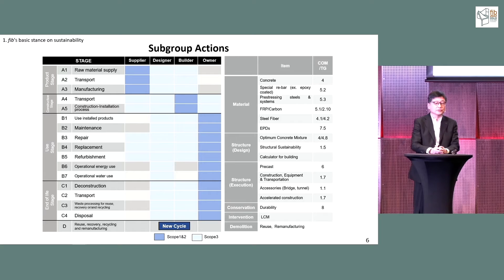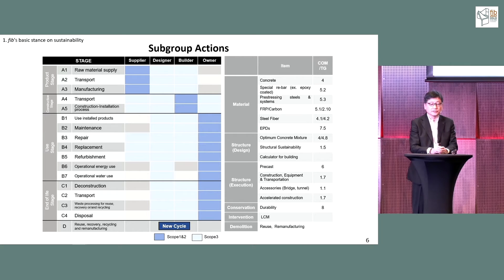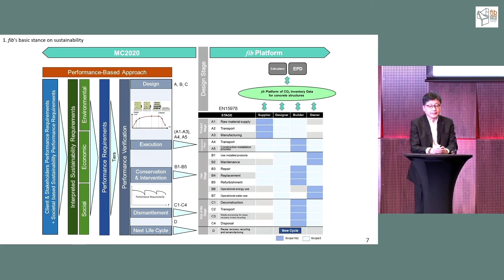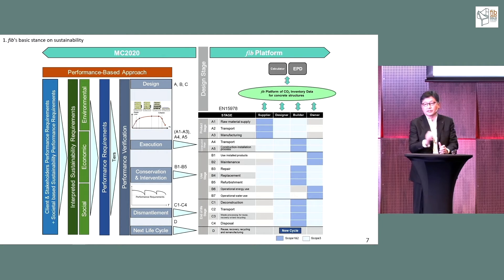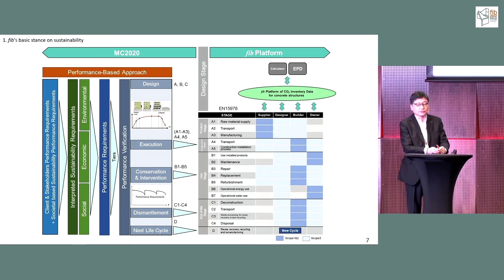I show you again the supply chain from the material to the next cycle. On the right-hand side, we now have many commissions and task groups covering material, structure design, execution, conservation, intervention, and demolition. We combine all the power of FIB to make an activity group to meet the new Model Code. The left-hand side is a flow chart of the design and the right-hand side is our new platform — everything related from design to demolition.